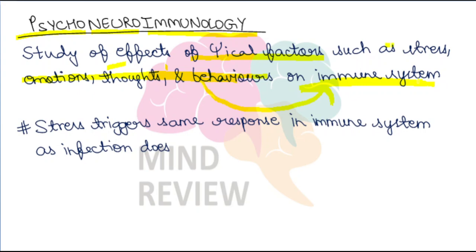In sari cheezon ka aapki immune system ke functioning pe kya impact padta hai — this is what the field of psychoneuroimmunology attempts to study. The immune system mein white blood cells bhi hote hain jo try to fight with external agents — jo bhi bacteria, viruses aate hain humari body mein, humara immune system unse fight karne ki koshish karta hai taaki protect kare our body. Toh jo psychological factors hote hain unka kuch na kuch impact hota hai is immune system ke functioning pe.